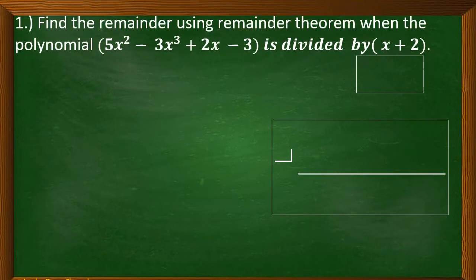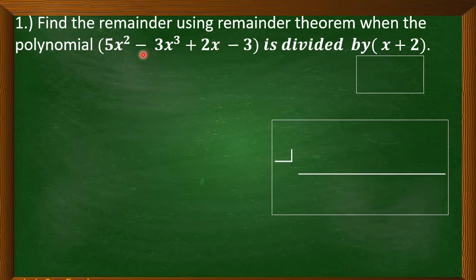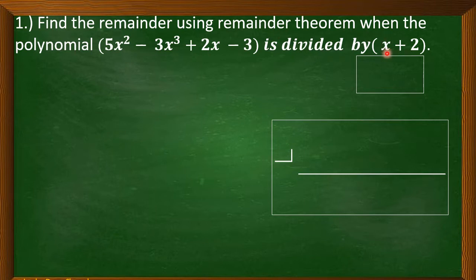Let us consider the first example. Find the remainder using the remainder theorem when the polynomial quantity of 5x squared minus 3x cubed plus 2x minus 3 is divided by quantity of x plus 2. Our p of x is 5x squared minus 3x cubed plus 2x minus 3. The given polynomial is not yet written in standard form, but it is not necessary to write it in standard form. Just leave it as this form. And our divisor is quantity of x plus 2.